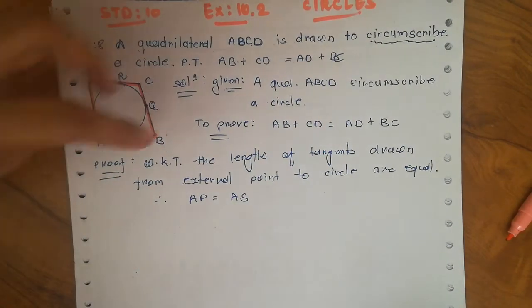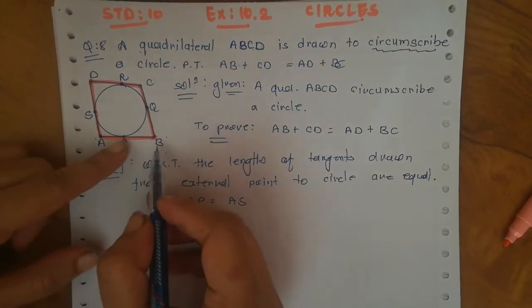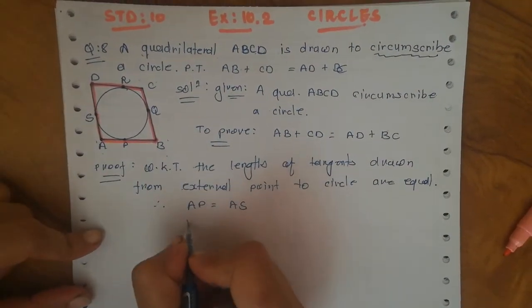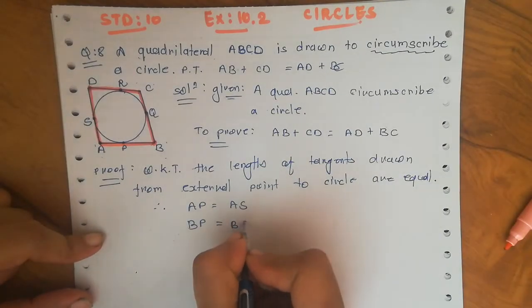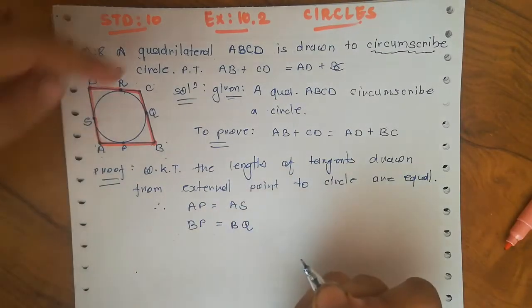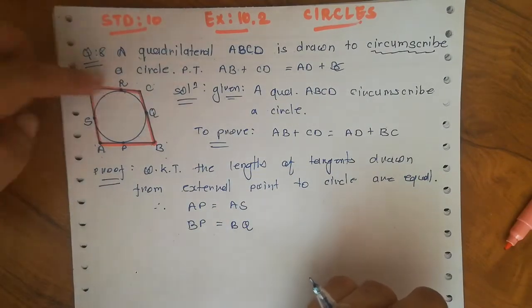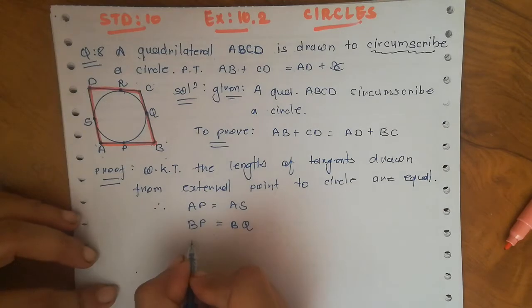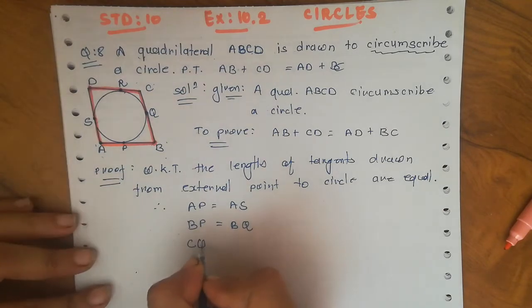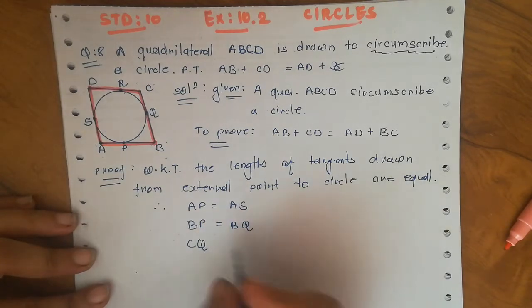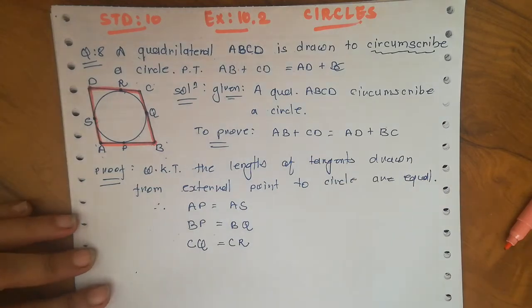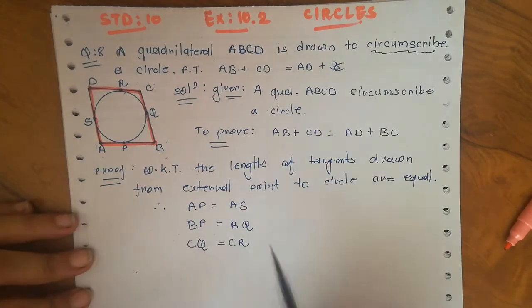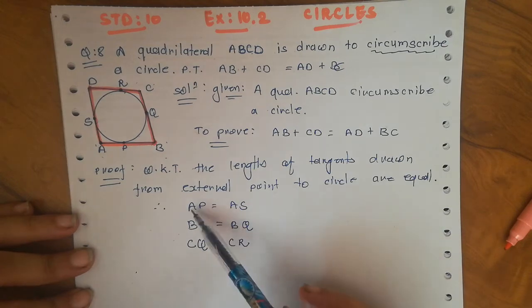Applying this theorem: from point A, AP equals AS. From point B, BP equals BQ. From point C, CQ equals CR.